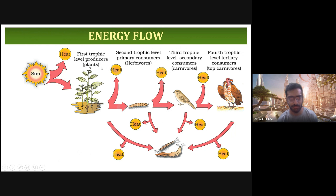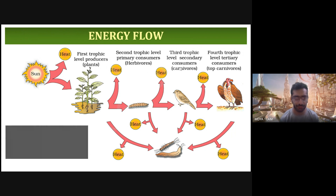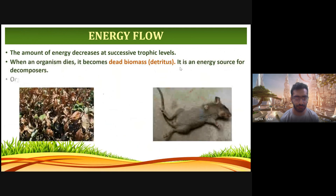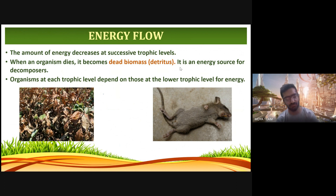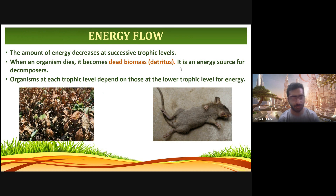Energy flows from the sun to the producers, to the primary consumers, secondary consumers, and tertiary consumers — which are plants, herbivores, carnivores, and top carnivores respectively. The amount of energy decreases at successive trophic levels. When an organism dies, it becomes dead biomass. Dead biomass is an energy source for decomposers. Organisms at each trophic level depend on those at the lower trophic level for energy. Energy is highest at sunlight and very low at dead biomass.